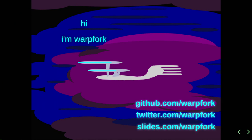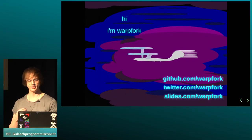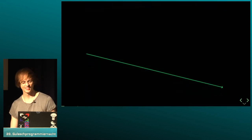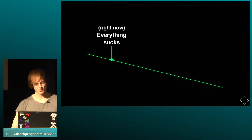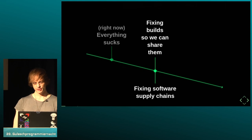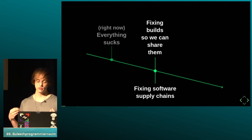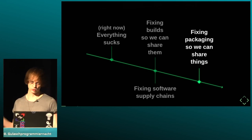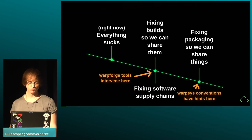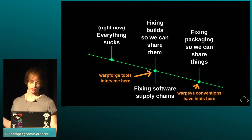I also go by WarpForge on the internet. All of the slides are under that name — you can find me on GitHub and Twitter there. This talk will come in several phases. In the beginning I'm going to complain about the state of the world as it is today. Then for most of the talk I'll discuss systems for building software and fixing build descriptions, focusing on sharing and fixing software supply chains, with liberal application of cryptographic hashes. At the end, I'll touch on packaging and how we approach that for easier sharing.